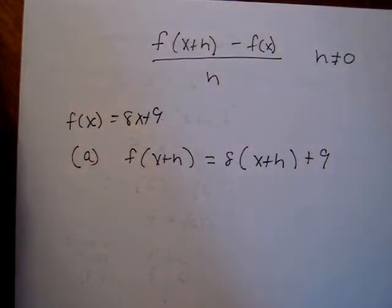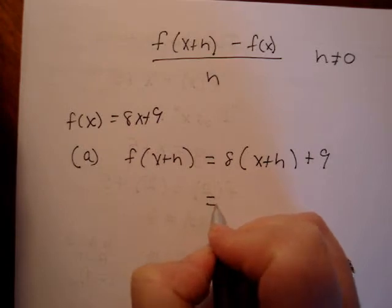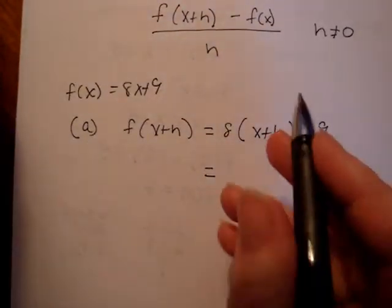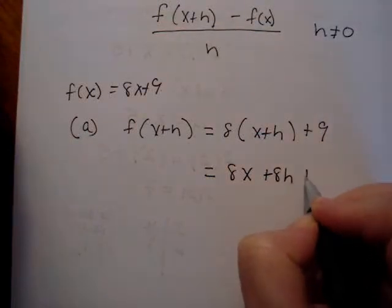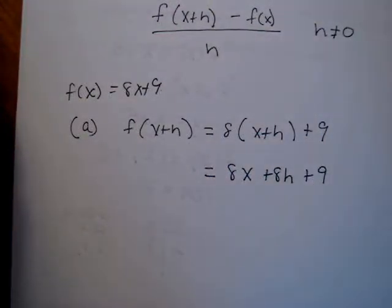And now let's simplify that. Well, let's multiply that, I should say. Whether it's simpler or not could be argued. So we would get 8x plus 8h plus 9. And that's it. There are no like terms. That's it.